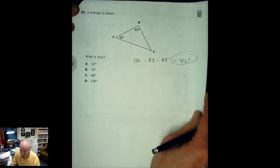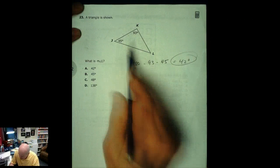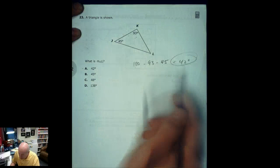Find the missing angle. This one is pretty easy. Hopefully nobody will miss this one. Just take 180 and subtract the 93, subtract the 45 and you've got your 42 degrees there.